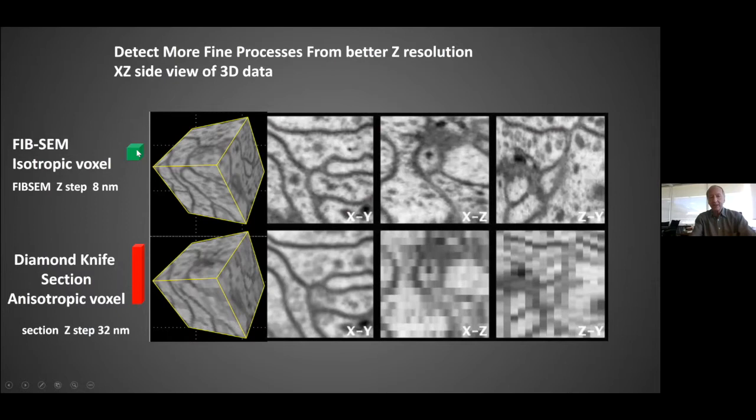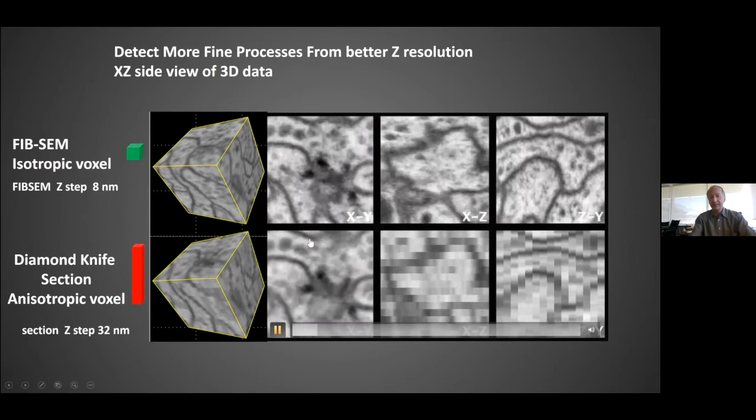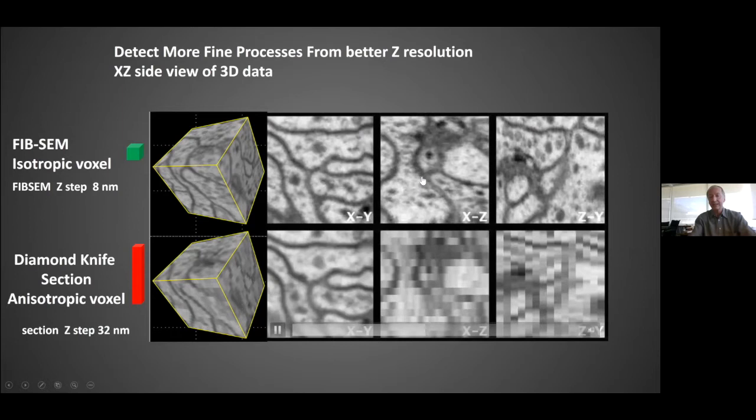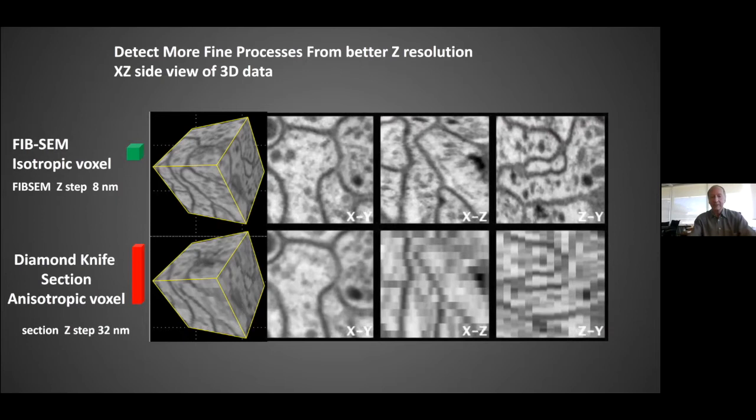The big advantage is that with an ion beam, as opposed to with a diamond knife, you can take very fine sections in Z, and you don't end up with this little choppy quality of the data in Z, and that allows you to resolve potentially very fine processes in better detail, which was especially difficult for the fly.